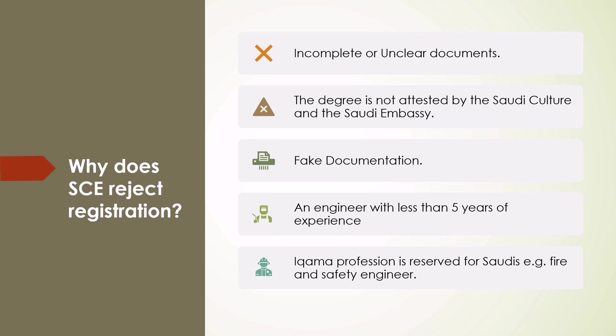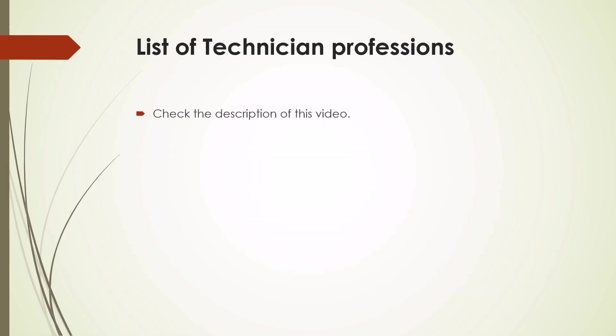In the last step, you need to pay the membership fee to the Saudi Engineering Council. The membership fee is Saudi Riyals 200 per year for technicians and Saudi Riyals 250 per year for engineers. It is important to note that the Saudi Engineering Council registration for technicians is required for the Ikama renewal of 136 specific professions only. The list is given in the description of this video. If you have a different profession on your Ikama, you do not need to go through the above-mentioned procedure.